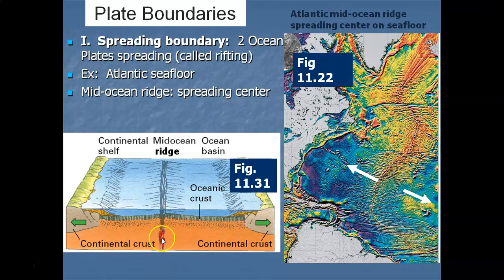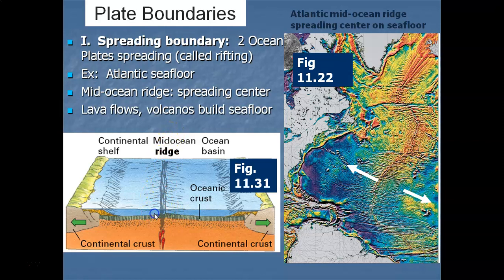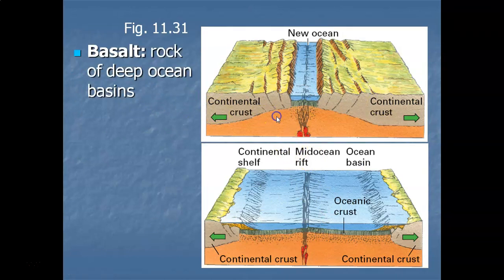Right at the spreading boundary, magma rises from the asthenosphere through the fracture, pushing the plates apart. At the same time, the magma creates lava flows on the seafloor — lava flow after lava flow — building up relief. This creates the mid-ocean ridge, with higher elevation of thousands of feet. You can see the high mountain elevations in the orange colors right along the mid-ocean ridge.